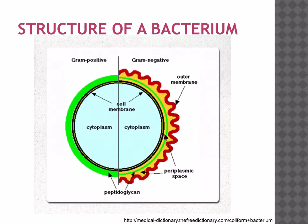Here you can see two types of bacteria. The one on the left is called gram-positive bacterium, and the one on the right is gram-negative bacterium. Gram-positive bacteria take up a stain, hence they're called positive. They don't have an outer membrane, but they do have a peptidoglycan wall.